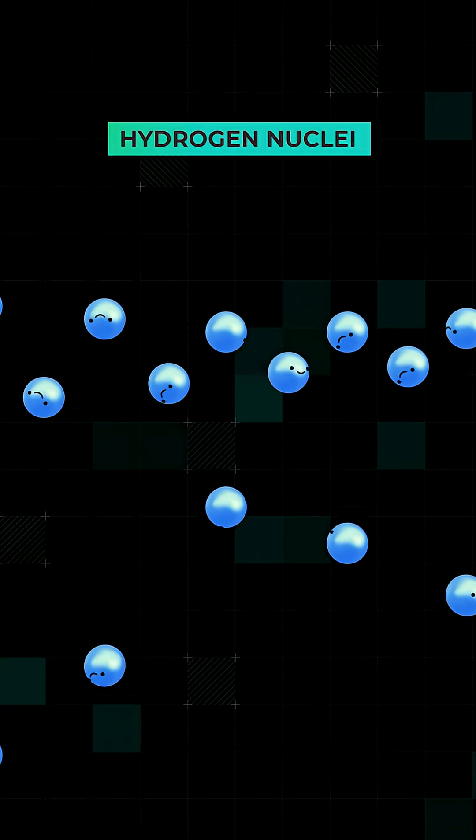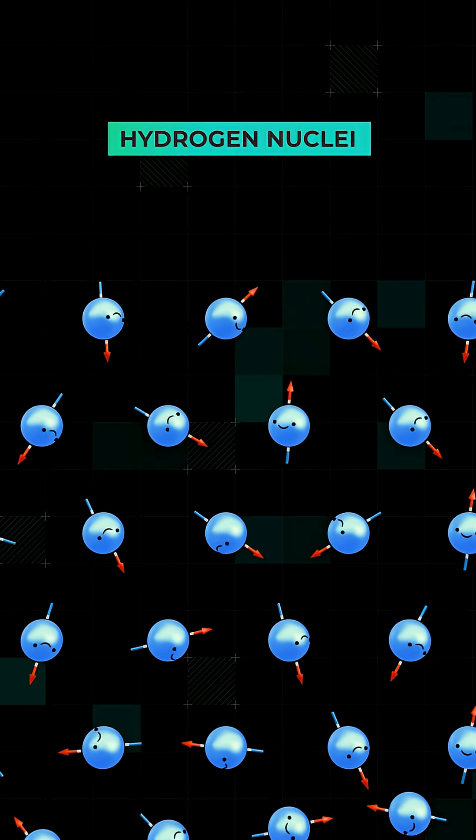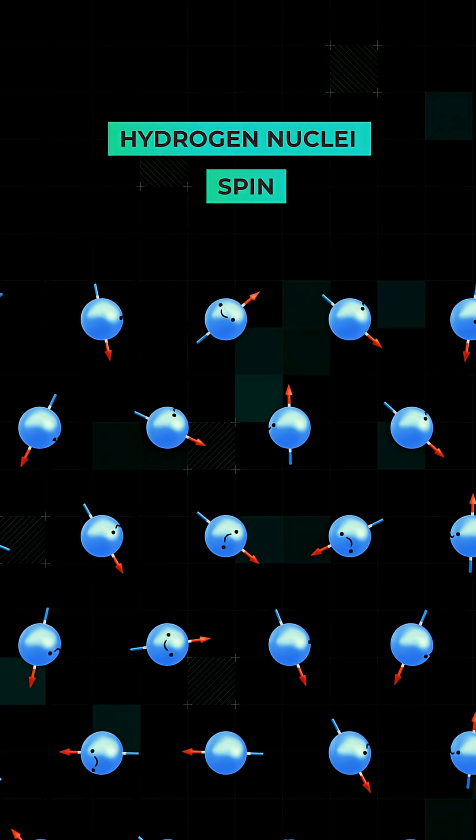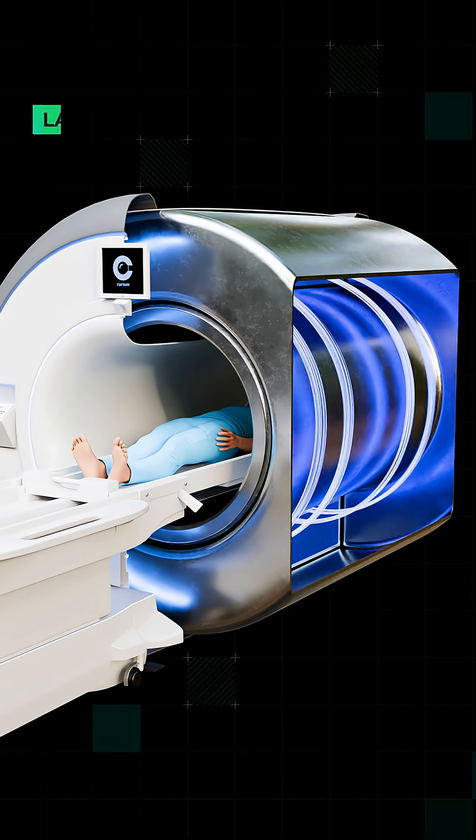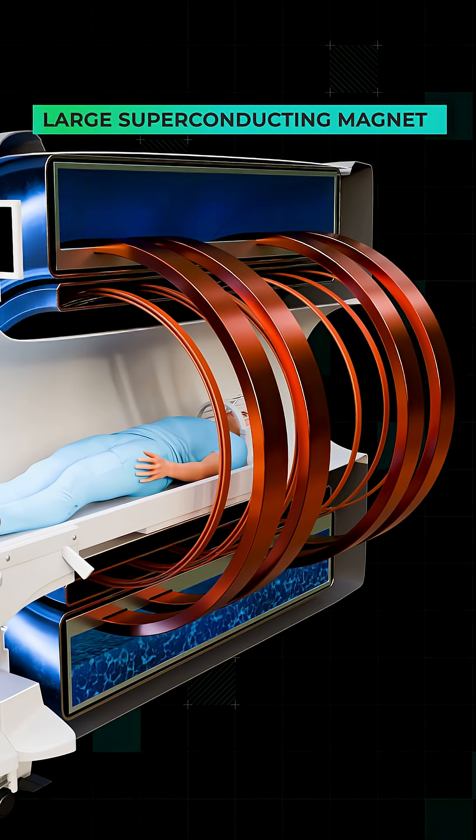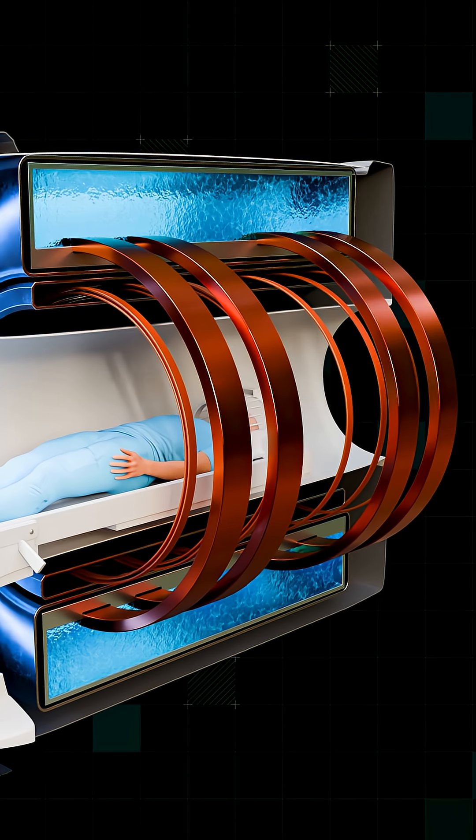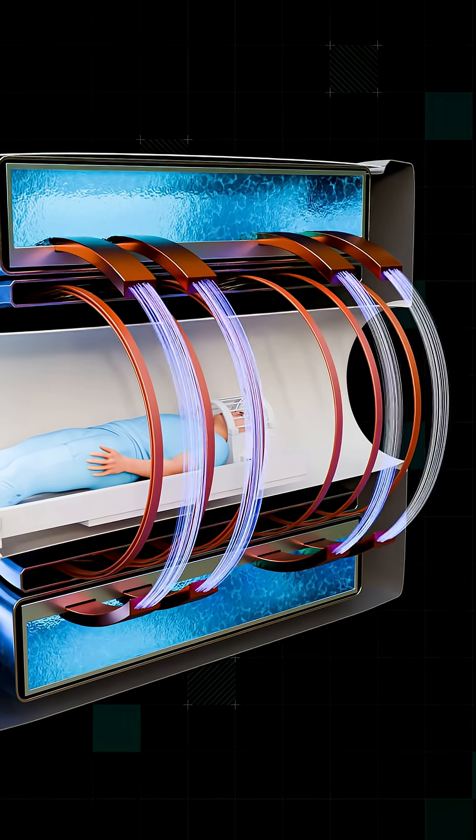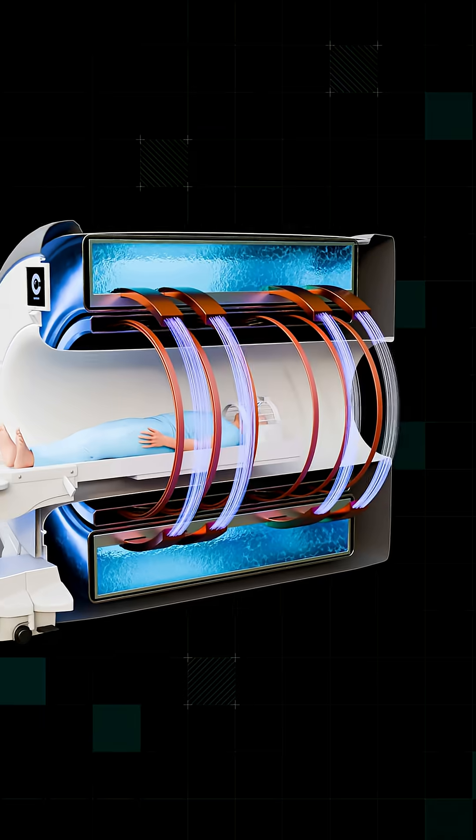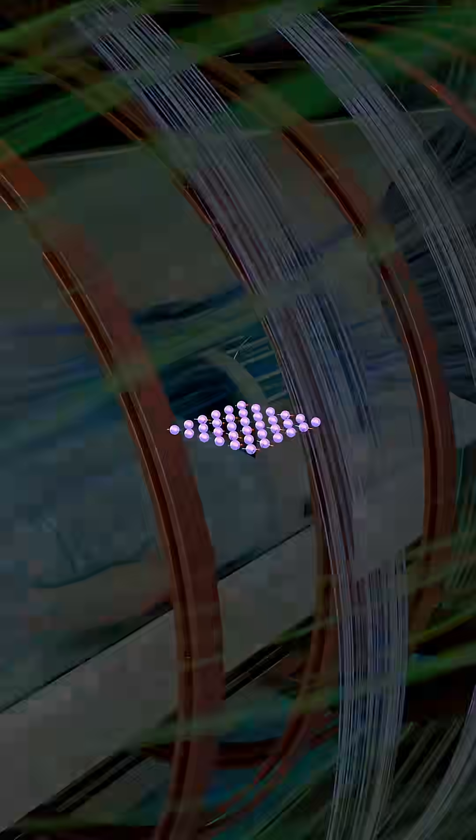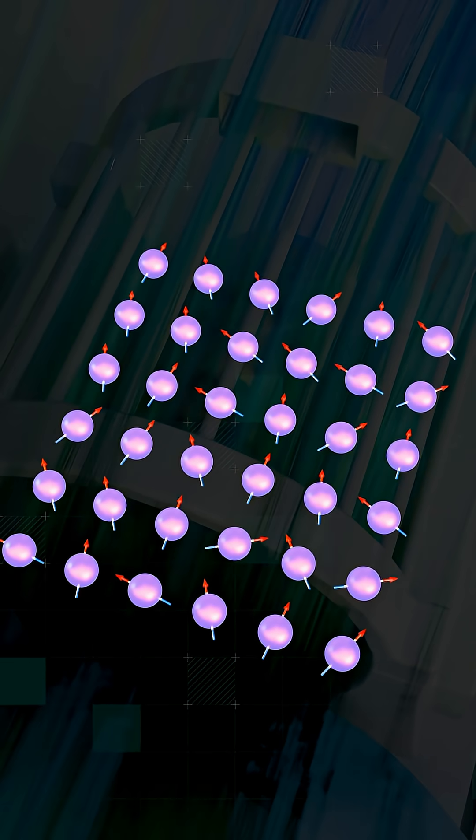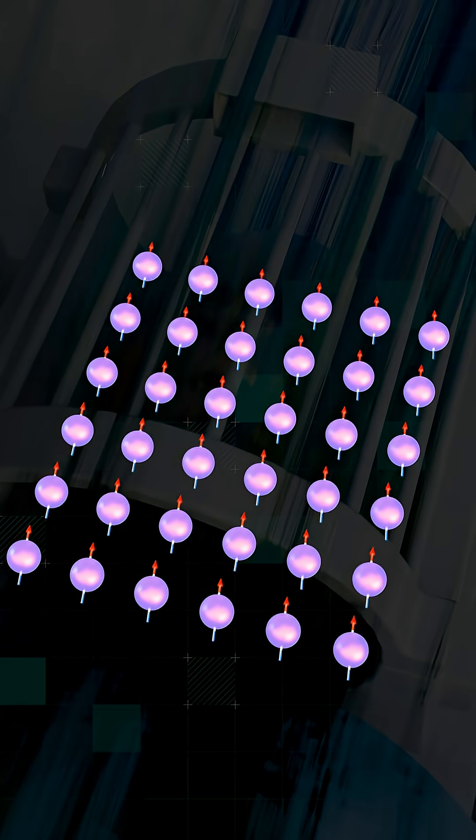Each hydrogen nucleus behaves like a tiny spinning magnet, a property called spin. To harness this property, MRI machines use a superconducting magnet chilled with liquid helium carrying enormous currents with zero resistance. Those circulating currents generate a very strong magnetic field. This powerful field forces all the hydrogen protons to align neatly along the longitudinal axis.